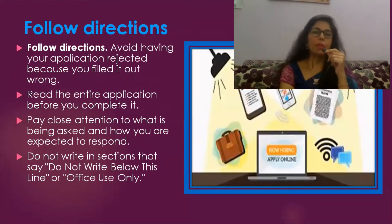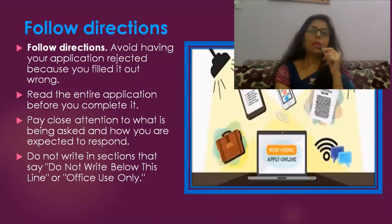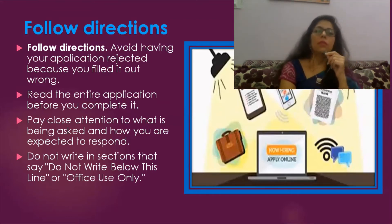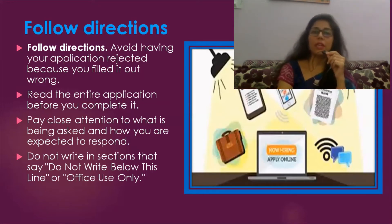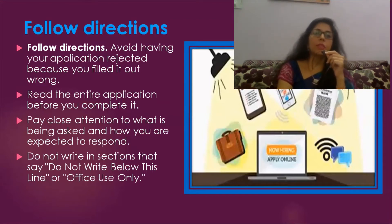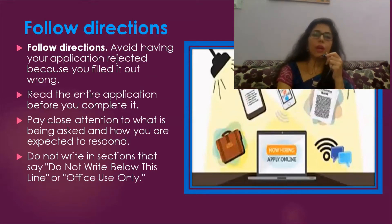While filling the applications, you need to follow certain directions. You need to avoid having your application rejected because you filled it out wrong. This cannot be an appropriate reason — that you have not read the application or the directions given appropriately, and that is why you were rejected. Read the entire application before you complete it, re-read it, edit it, and if required proofread it. Pay close attention to what is being asked and how you are expected to respond.